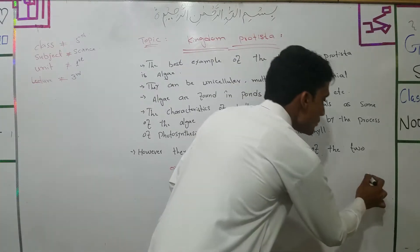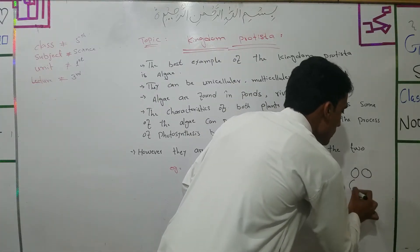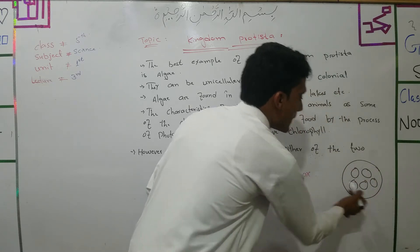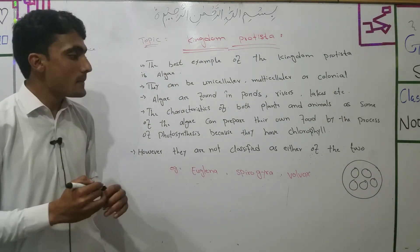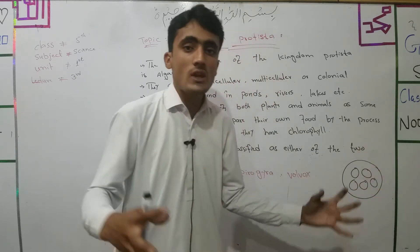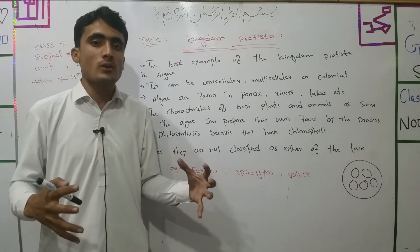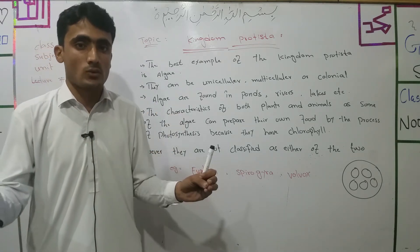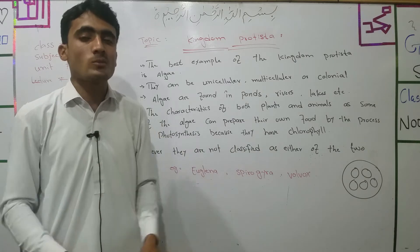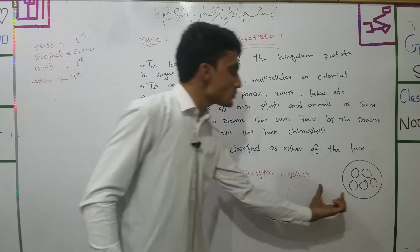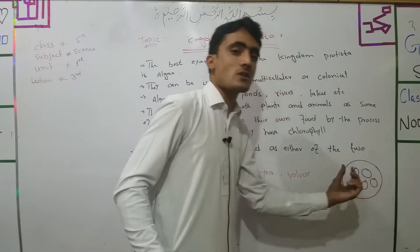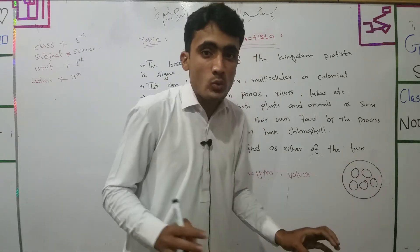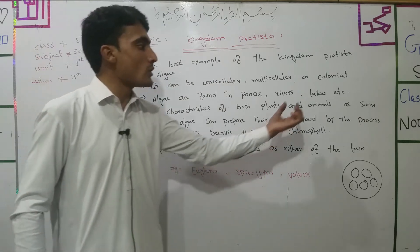Colonial form means that unicellular organisms live together to form a colony. When unicellular organisms group together and form a colony, that organism is called a colonial organism.